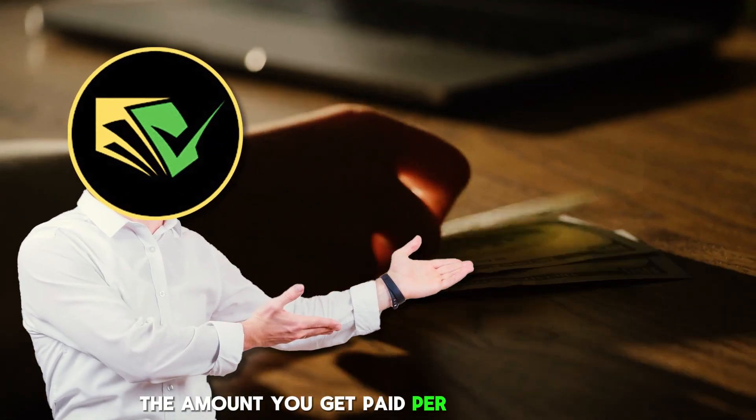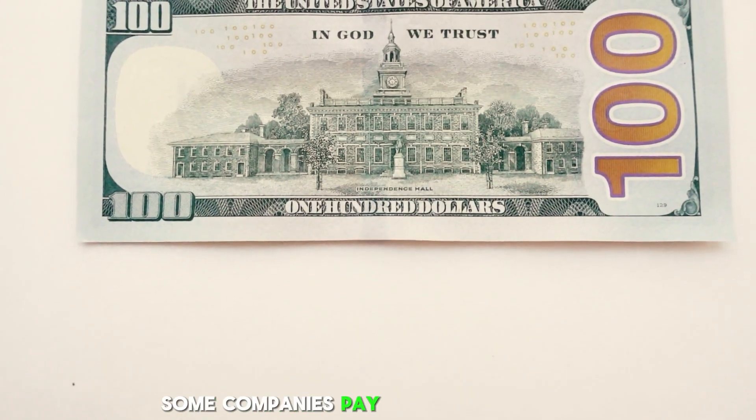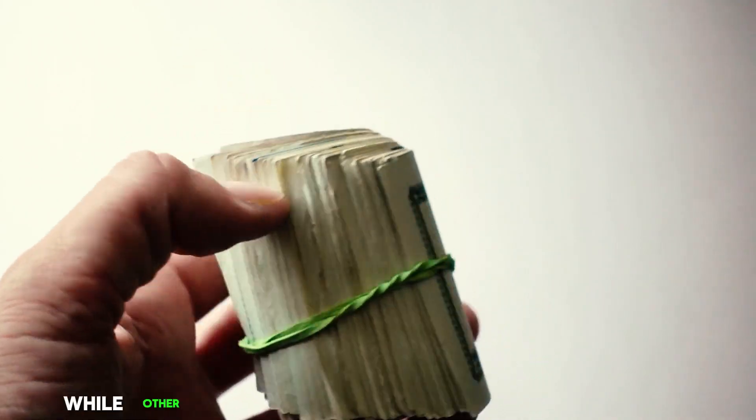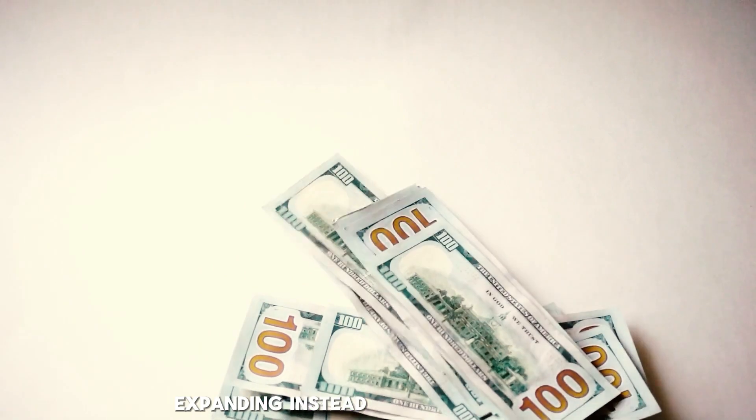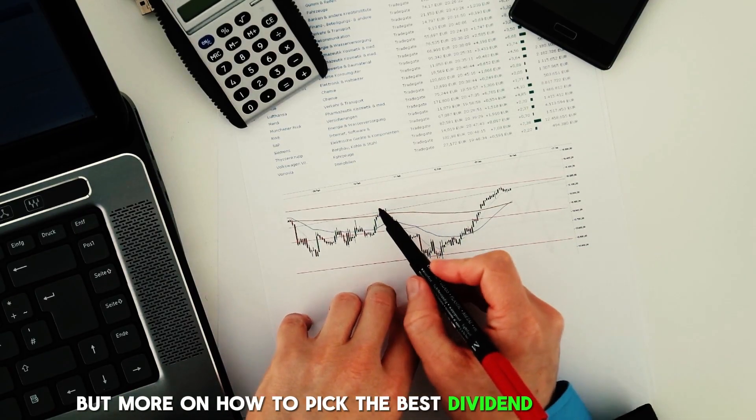The amount you get paid per share is called the dividend yield. Some companies pay high dividend yields, over 5-6%, while other growth companies focus their spare cash on expanding instead of paying dividends. But more on how to pick the best dividend stocks later.